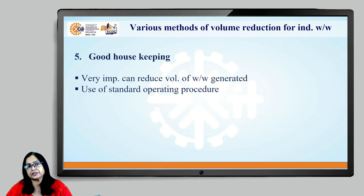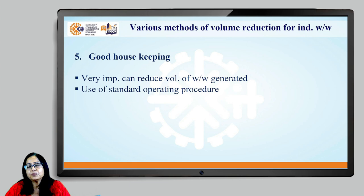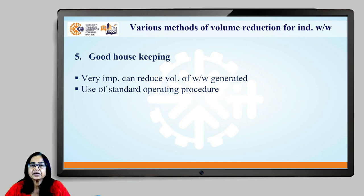The last method for volume reduction is good housekeeping. Simple normal habits or standard methods of operating can have very big outcomes. By maintaining good housekeeping in industry, there can be significant reduction in the volume of waste water generated or volume of water which enters the drain.